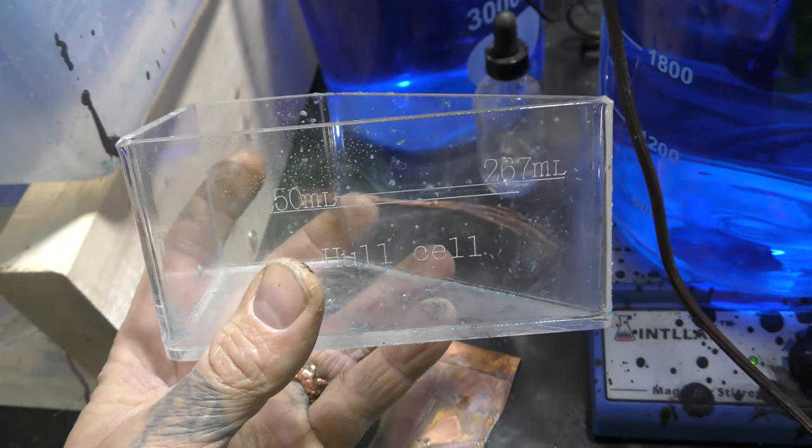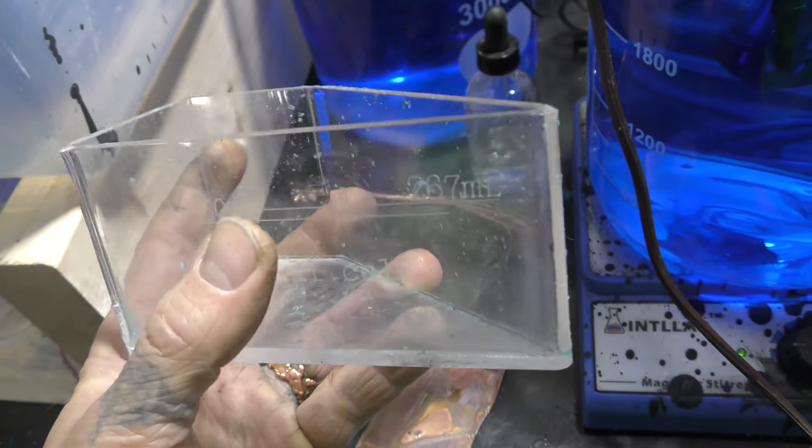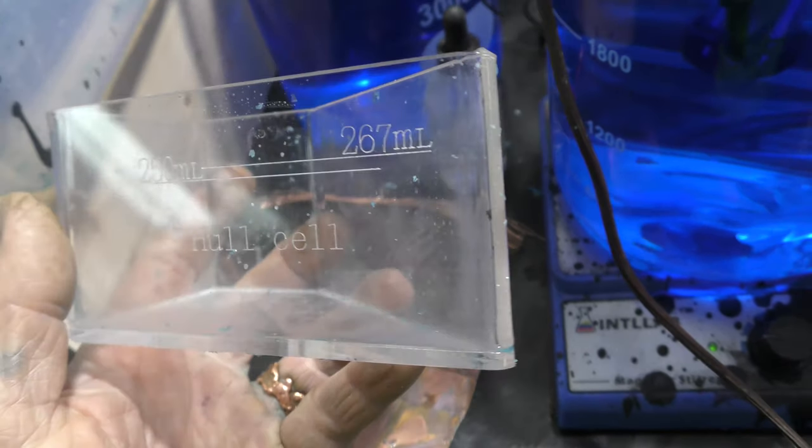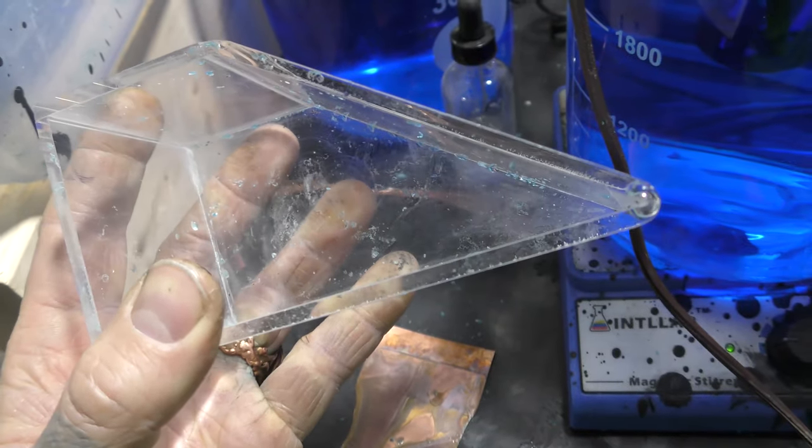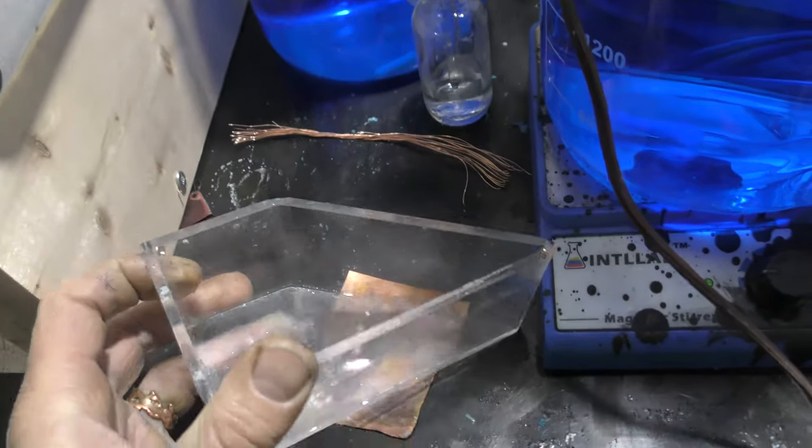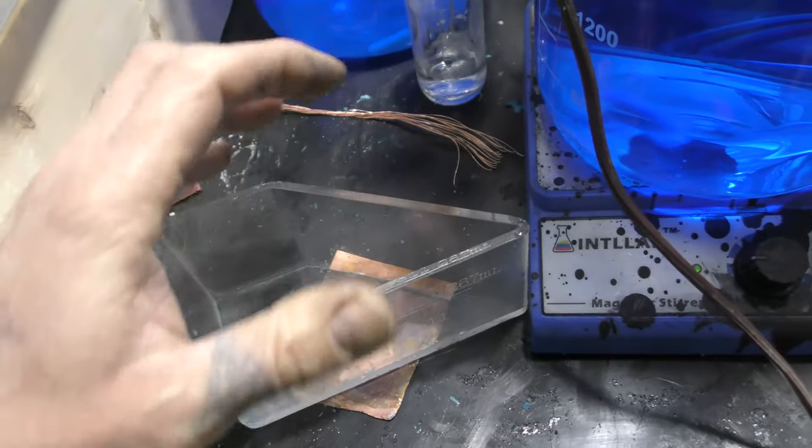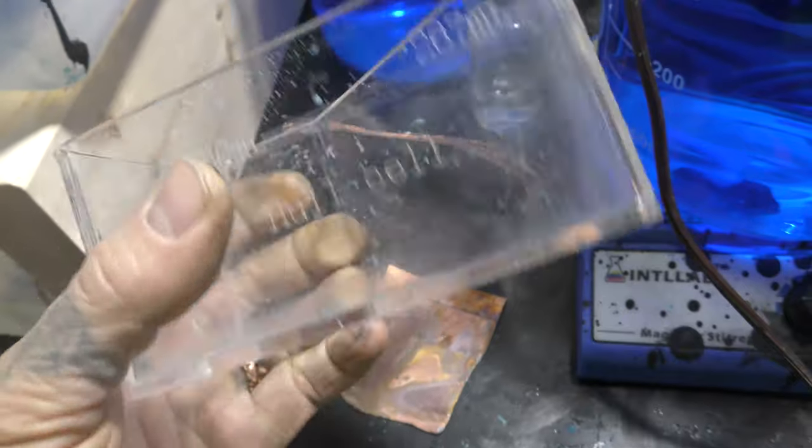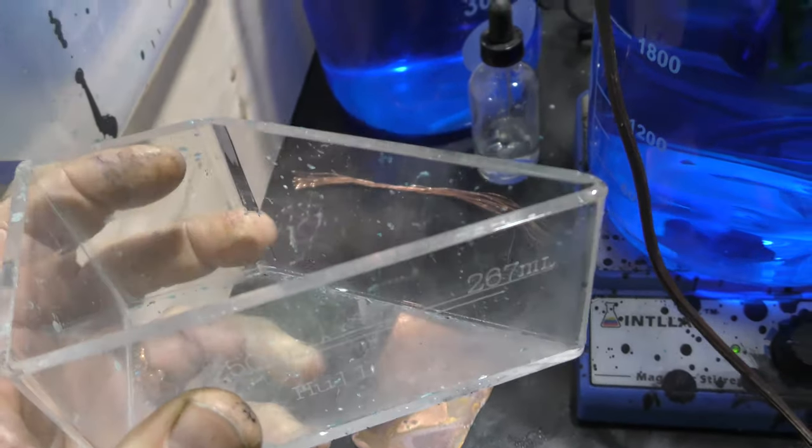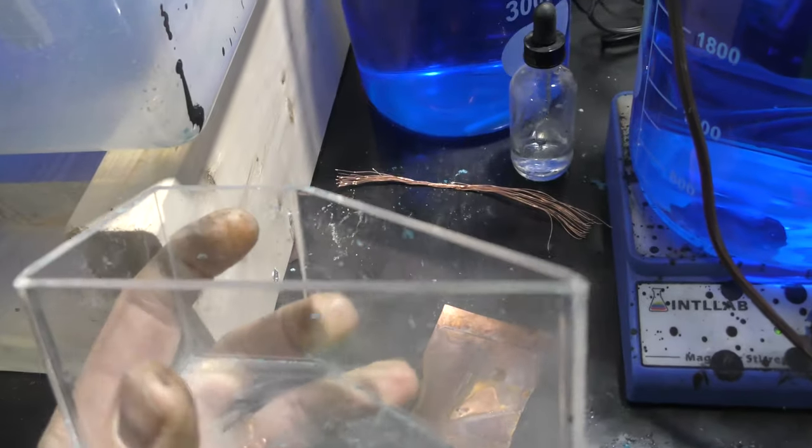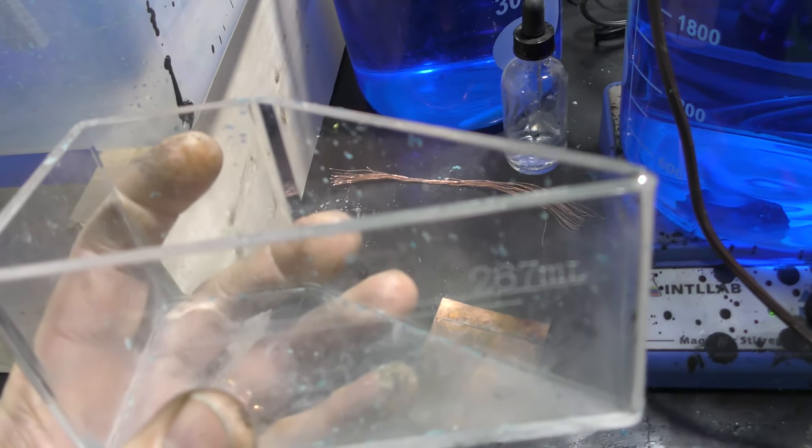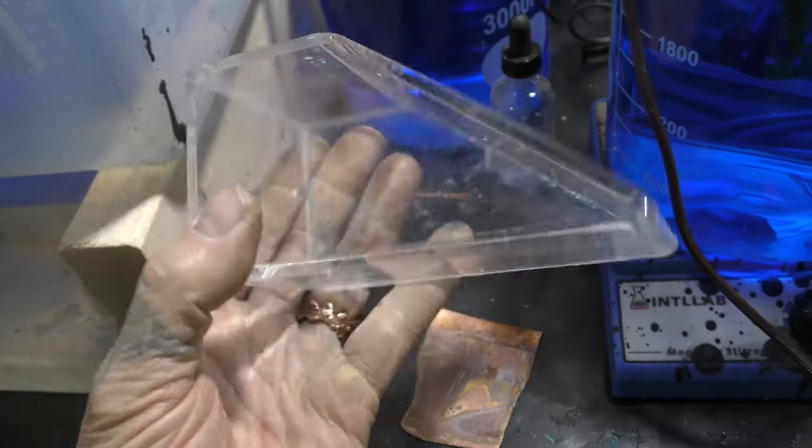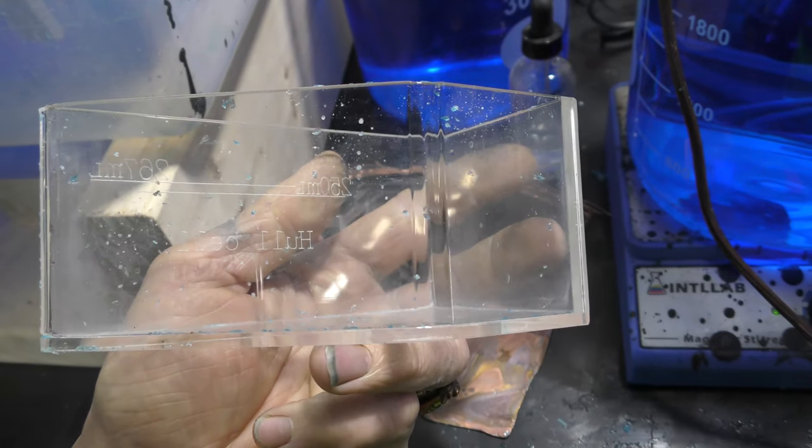These are all standardized. Just make sure you get the 267 milliliter one. Don't get any of the little doodads, like the anode and cathodes. You don't need any of the bubblers or any of that. Just this box. You actually make your own anodes and you make your own cathodes.